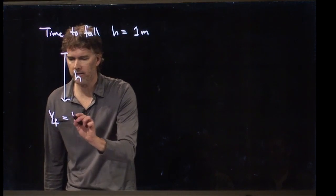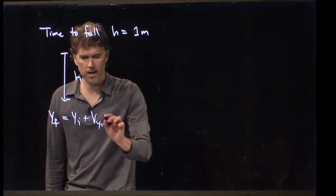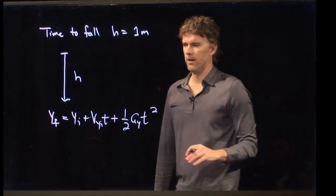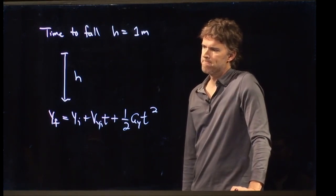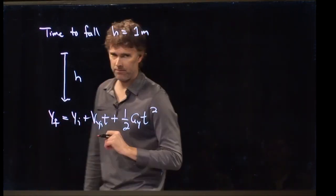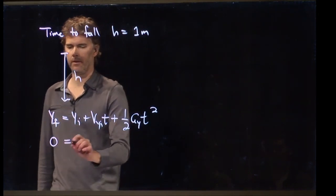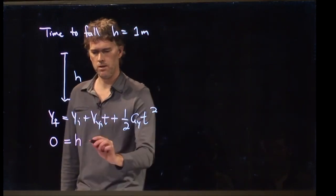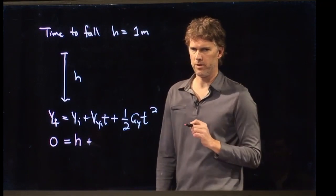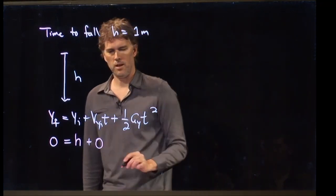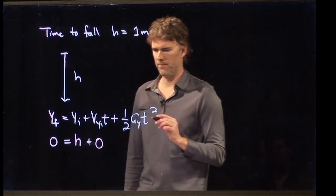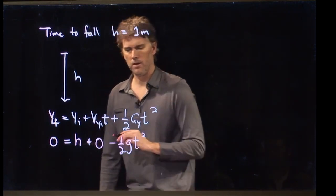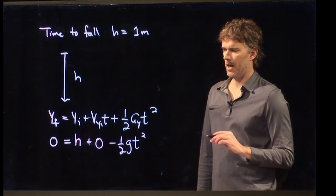One of those looks like this. Yf equals yi plus vyi times t plus one half a sub y t squared. That looks like a pretty good equation to use. Do we know y final? Yes. That is zero. Do we know y initial? Yes. That is the height h. What about vy initial? What's vy initial? Zero. What is a y? Negative g. So, we put a minus sign out in front. And we're going to label this one half gt squared right there.